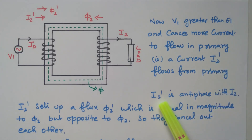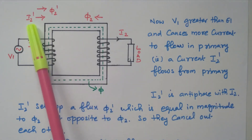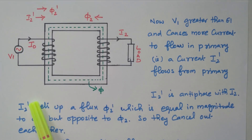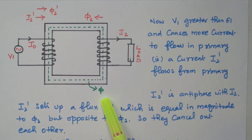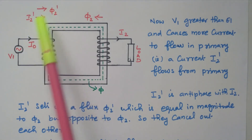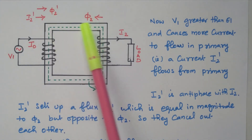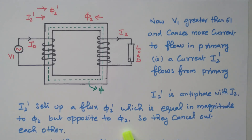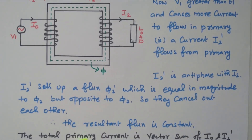Already I0 is present. Now, I2' is in antiphase with I2. See the direction — I2' is flowing in a direction that opposes I2. This I2' will produce its own flux φ2'. See the directions of φ2 and φ2' — both are in opposite directions, so they cancel each other. Therefore, the main flux φ remains constant. That is the important result. The flux φ2' produced by I2' cancels φ2. Both are equal and opposite in magnitude, so they cancel each other, and the resultant flux remains constant.